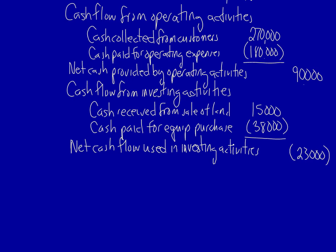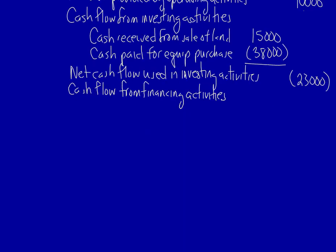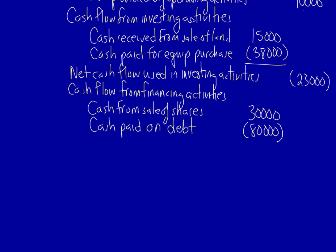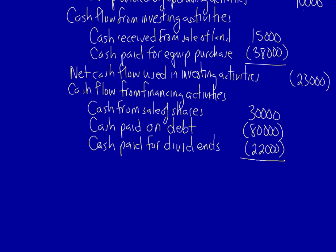Moving on to financing activities. We received cash because of the sale of the company's shares. We also repaid a portion of our long-term debt. And finally we paid cash for dividends. The net amount is an outflow — net cash flow used in financing activities.